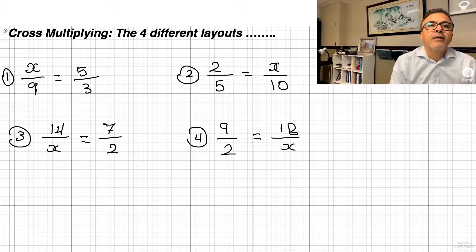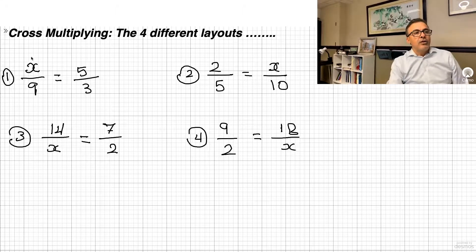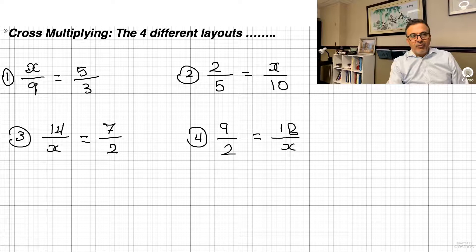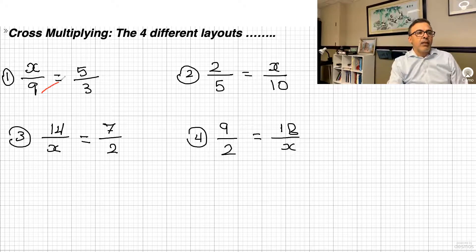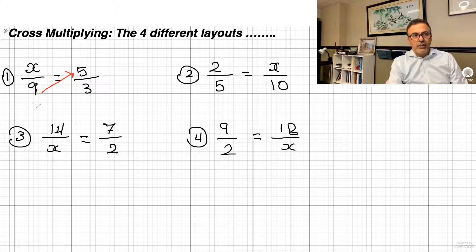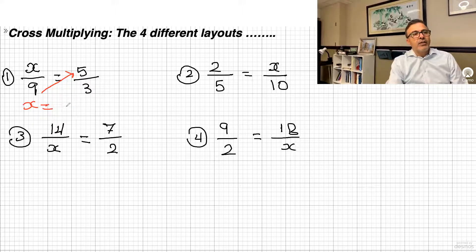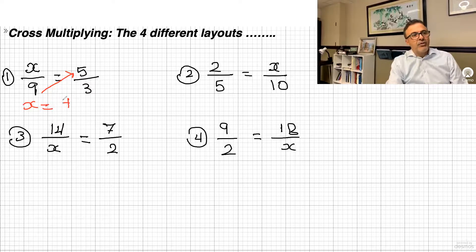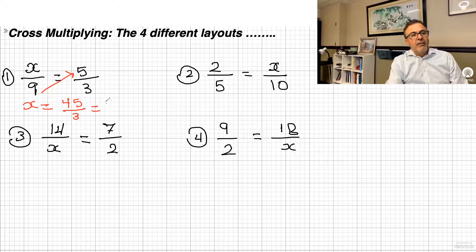With the first one here, you have your variable right here and you want to solve for it. This is the easiest way to do it. Just cross-multiply the nine in there. If it's on the bottom and it crosses the equal sign, it goes to the top. So I'll have x equals 9 times 5 is 45, and you still have the 3 on the bottom, and 45 divided by 3 is 15.